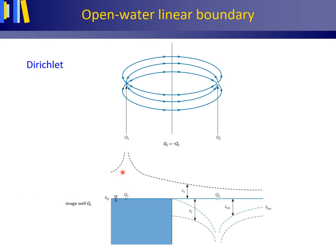The mirrored well is called an image well. In reality, this well does not exist, but is solely incorporated into the model to create an open water linear boundary with constant hydraulic head H_r to the left or west of the pumping well. The part of the model that exists in reality is the part to the right (east) of this open water linear boundary. A known constant hydraulic head at the boundary of a water flow region is called a Dirichlet boundary condition, after German mathematician Johann Peter Gustav Lejeune Dirichlet. An image well in Dutch is called a 'spiegelput'.